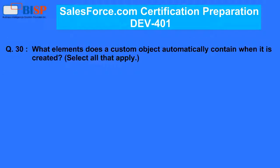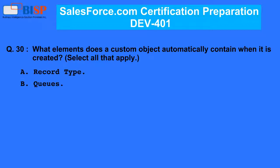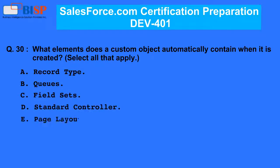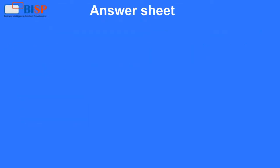Question 30. What elements does a custom object automatically contain when it is created? A. Record type. B. Queues. C. Field sets. D. Standard controller. E. Page layout.